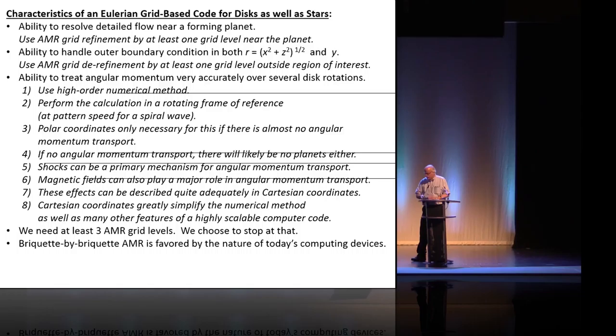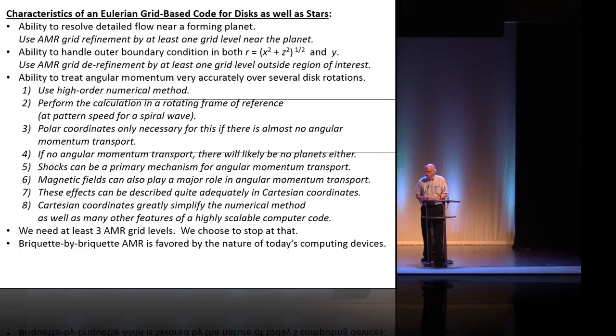So what I've said here is that the polar coordinates, I think, really are best if there is a very small amount of angular momentum transport. But the reason that I want to use Cartesian coordinates is that it is much easier to design a really effective numerical method in Cartesian coordinates. And they are just ideal in terms of doing the domain decomposition and everything else.